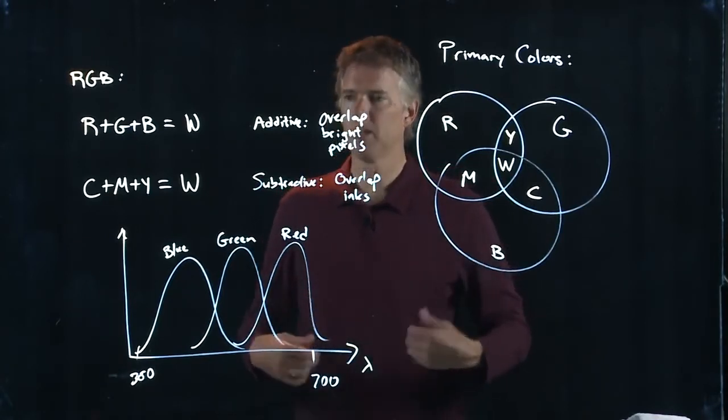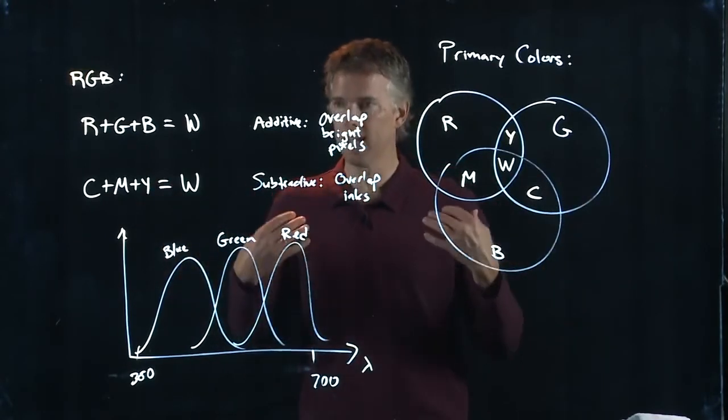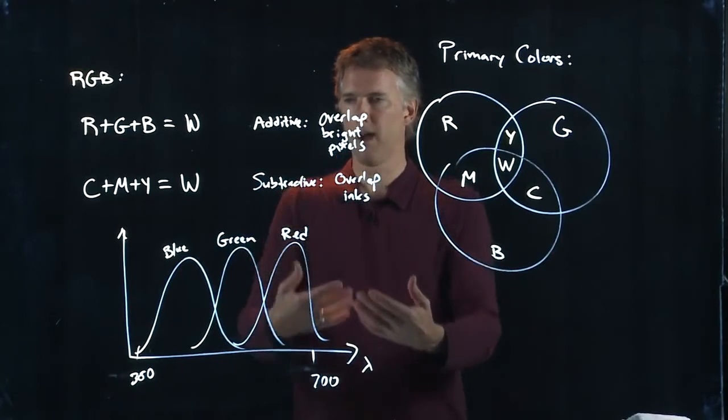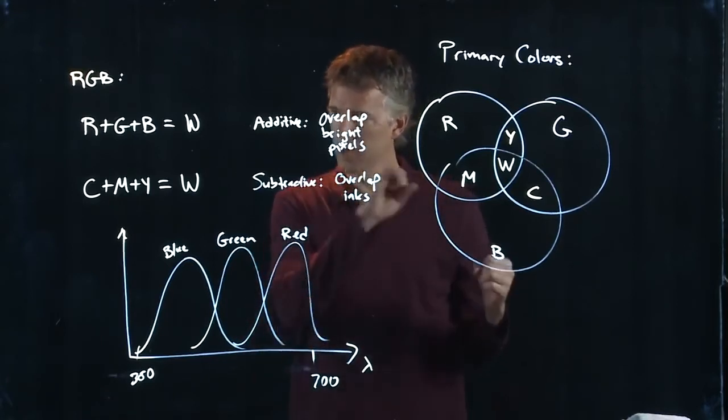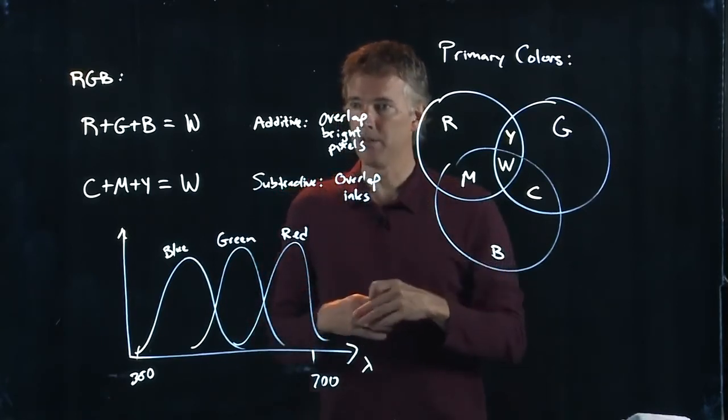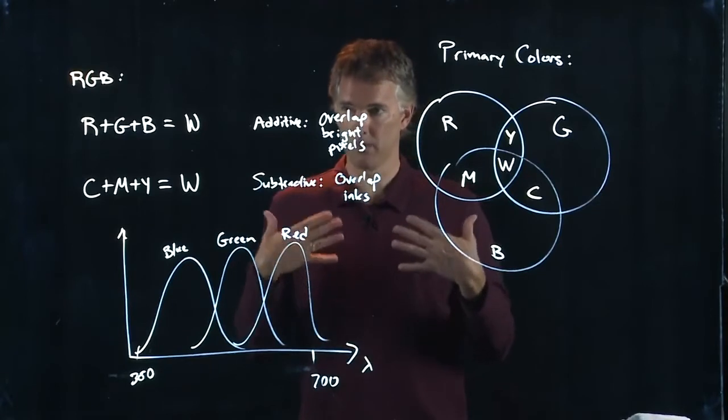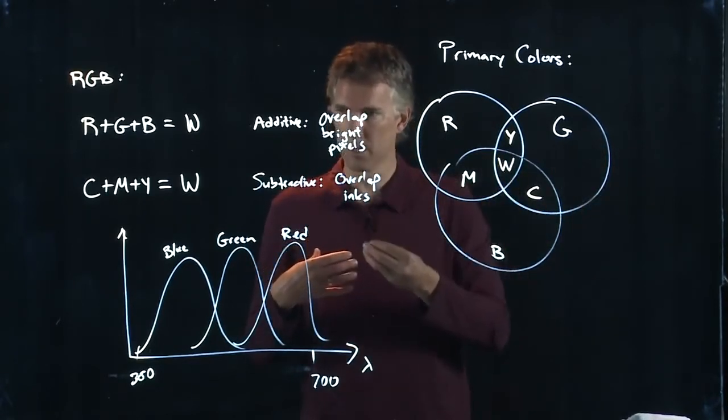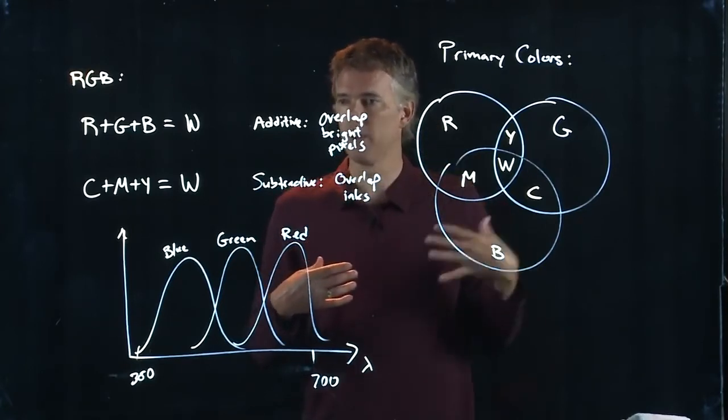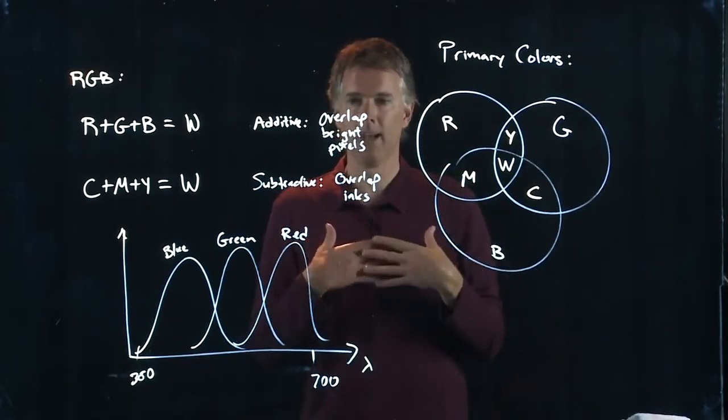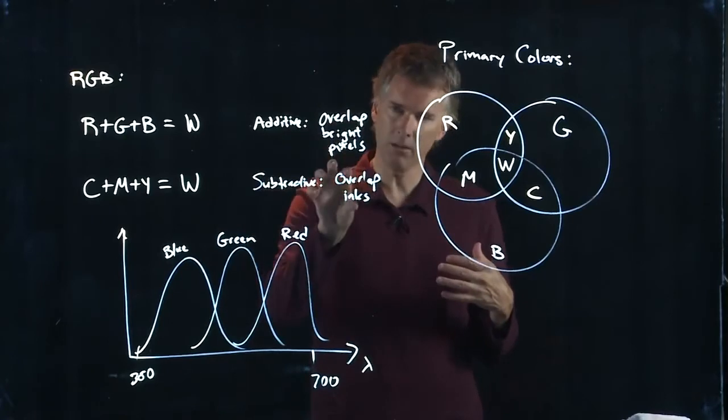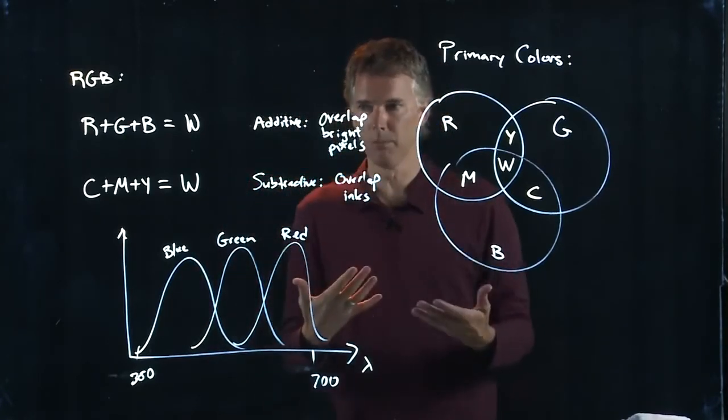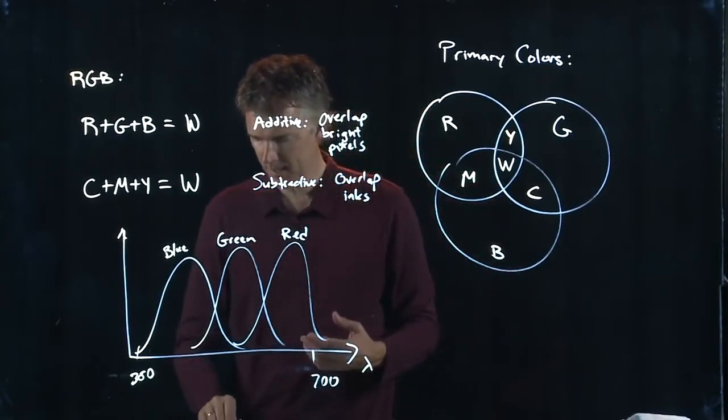My shirt is red because it's absorbing the other colors except red, and those colors are bouncing off to you. But if I put blue paint on my shirt and green paint on my shirt, now it's absorbing not only the stuff blue and green from the original colors, it's absorbing the greens and the blues and the reds in all the other colors as well. It'll turn black, and that's subtractive. So these are inks. Additive colors are when you do bright beams like the pixels on your computer monitor.